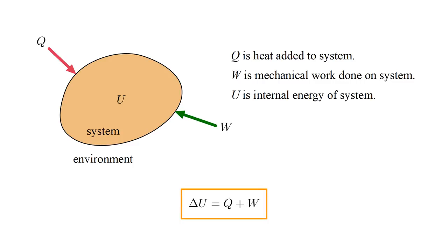Then the first law reads, ΔU equals Q plus W. The change of the system's internal energy equals the energy added to the system as heat, plus the energy added in the form of work. Any of these three quantities can be positive or negative. A negative Q, negative heat added to the system, corresponds to positive heat being transferred from the system to the environment. A negative W, negative work done on the system, corresponds to the system doing positive work on the environment. A positive or negative ΔU indicates that the internal energy has increased or decreased.